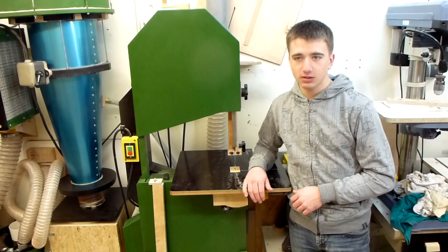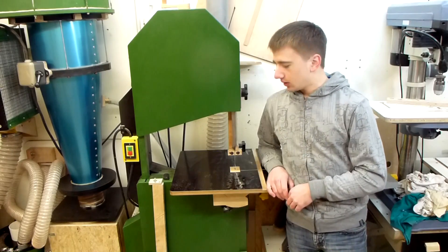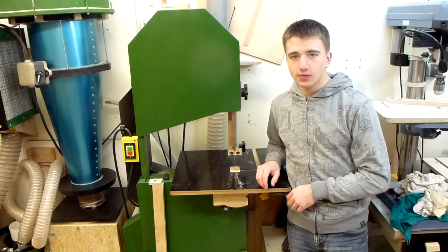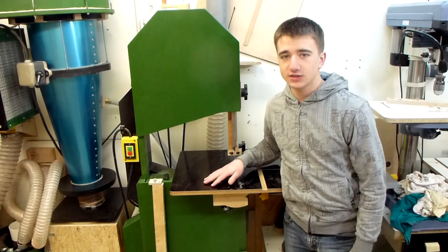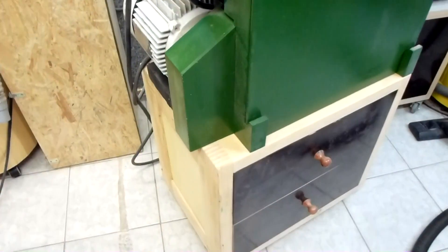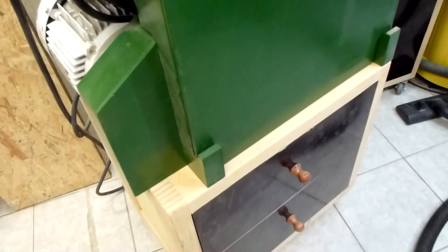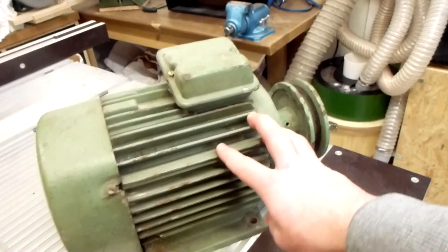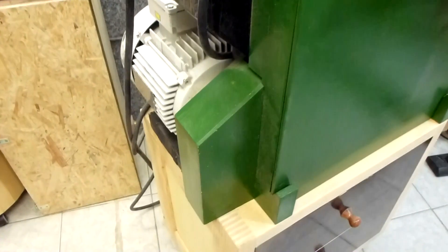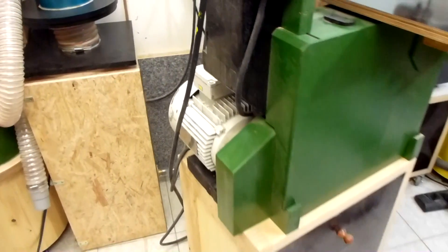This is my homemade bandsaw that I built about one year ago with the plans from Matthias Wandel, link in the description. As you just could see, it performs really well. But when I built it, I changed several things in the design so it would fit my needs. The first change I made was the size of the cart that goes under the bandsaw. It is a little bit wider in this direction because I originally used this very heavy motor. It had to be supported with a bigger cart so the saw won't tip over because of the weight of the motor.